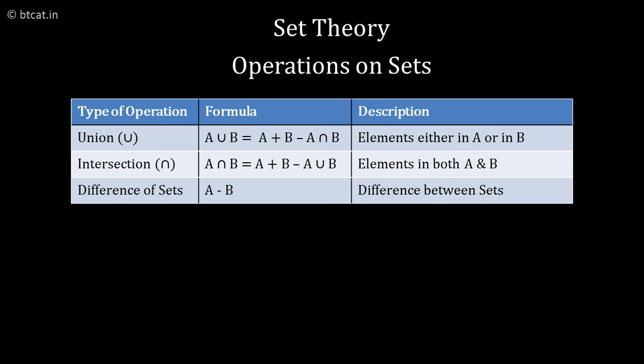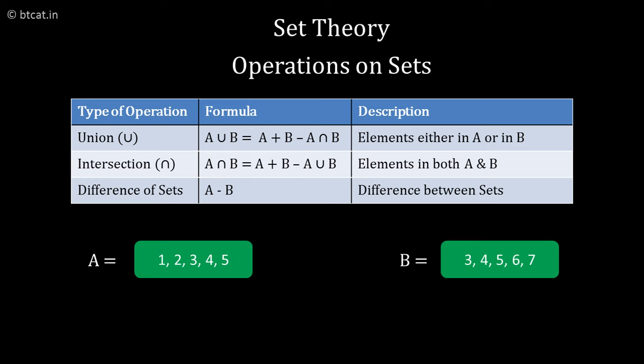What is A intersection B then? A intersection B are the number of elements which are present in both of them. If I can explain by example: if A is 1, 2, 3, 4, 5 and B is 3, 4, 5, 6, 7, then A union B will be 1, 2, 3, 4, 5, 6, 7.